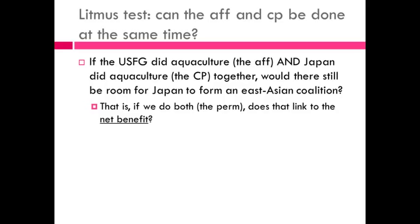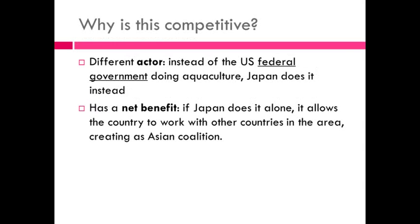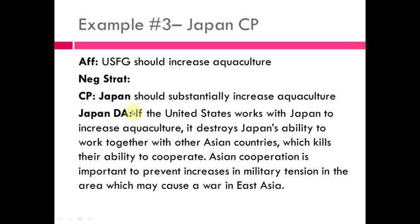Here's the litmus test for this one — and it's a little different. Can the affirmative and the counter plan be done at the same time? If the USFG did aquaculture and Japan did it simultaneously, would there still be room for Japan to form an East Asian coalition? If we do both — the perm — does that link to the net benefit? The answer is yes, we can say the plan and the counter plan are mutually exclusive. The reason: the disadvantage itself explains why doing both wouldn't work — the net benefit requires Japan working by itself to create the coalition, and it fails if the US works with them.